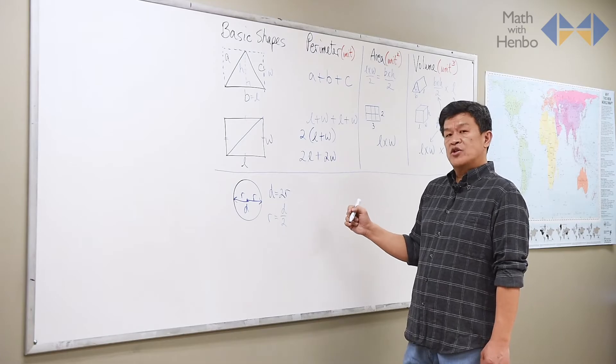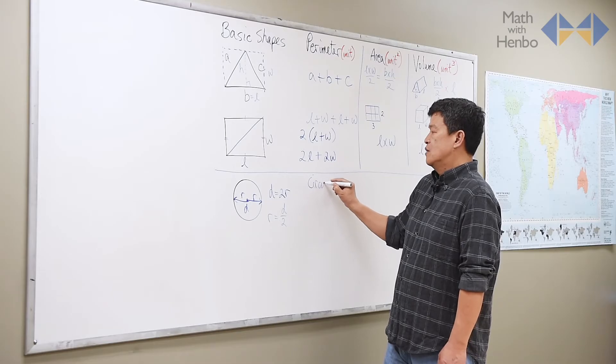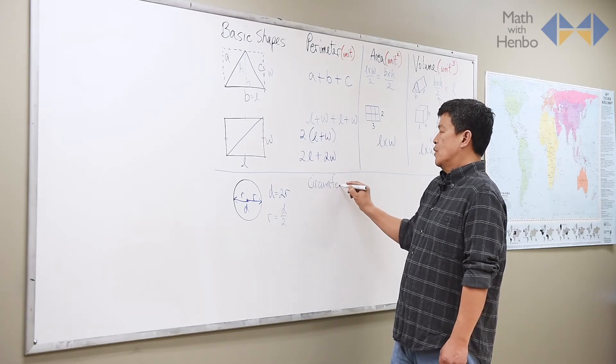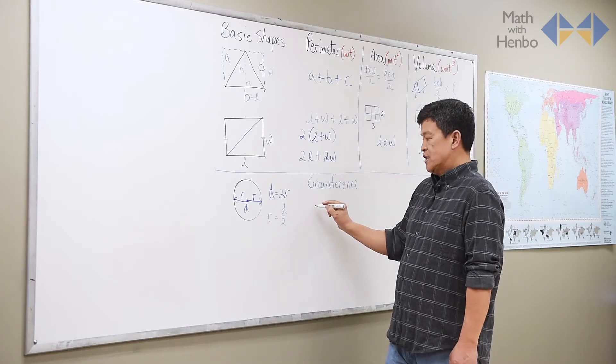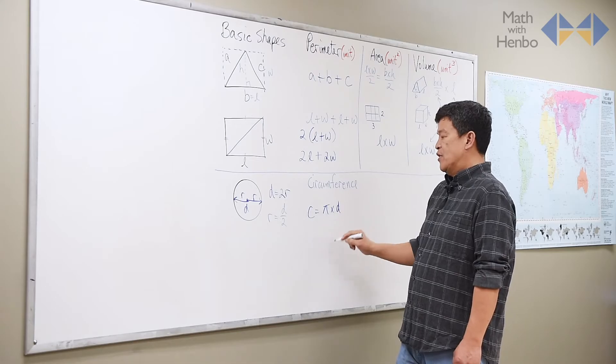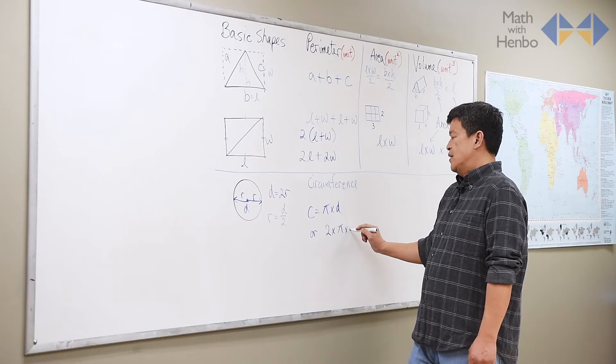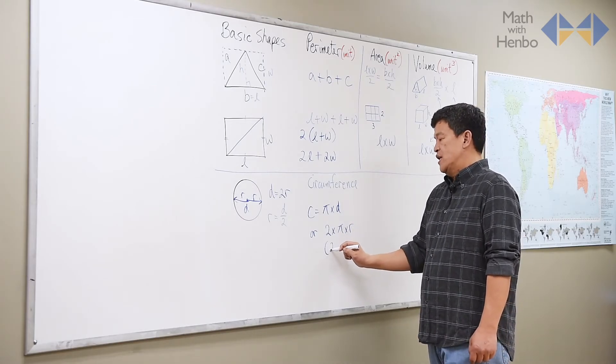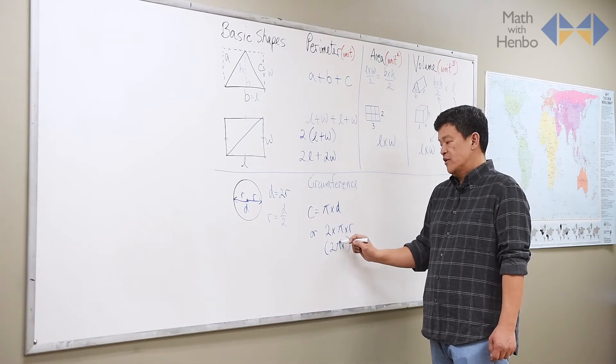Because when we want to calculate the distance around the circle, the thing to remember is that it's called a circumference. And the formula for it is something known as pi times diameter, or two times pi times the radius, also known as 2πr. Going alphabetical, that's all.